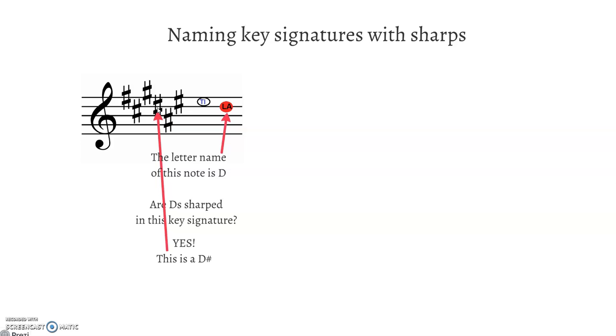If you need a quick way to figure this out, you can use the saying that I like to use with sharp key signatures, which is Farmer Charlie's Great Dane Always Eats Birds. Those are all the possible sharps you can have. So you can just quickly go through if you're thinking, are D's sharped? Farmer Charlie's Great Dane - Dane, D. Yes.